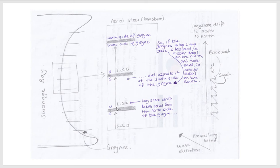In between the next two groins we have got the same thing happening. The waves with the swash and the backwash are coming onto the beach, they are moving the sediment, taking it from here — the north side of the groin — moving it, and then it hits the groin, gets stuck, and has to deposit it, and so forth. In between all these groins we have got longshore drift happening, but the waves can't take the sand completely off the beach because these groins are in the way.